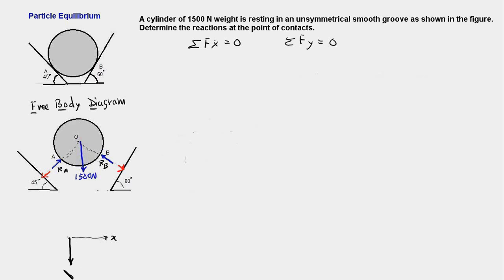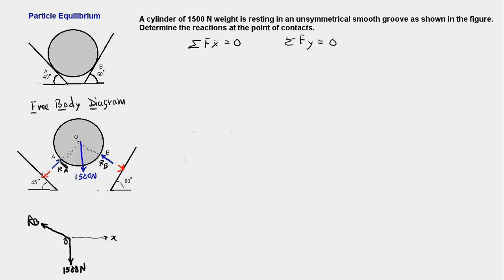Therefore we should show all the forces acting at point O. The weight is acting downwards. The reaction force Rb can be moved so that its tail coincides with point O. Similarly the reaction force Ra can be moved along its line of action so that its tail coincides with point O.